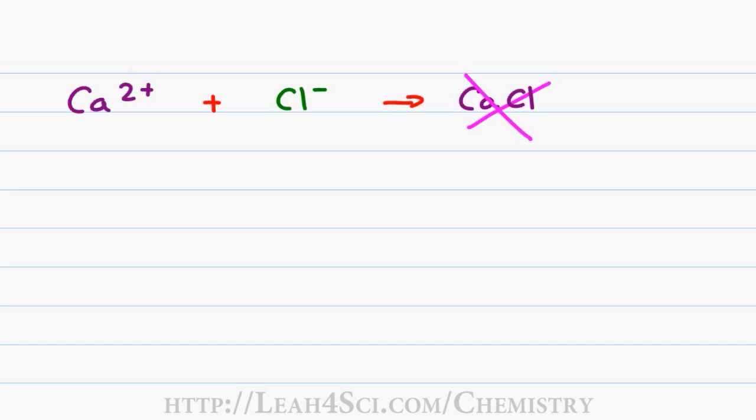The way you check the net charge is simply count up the charge on your cation which is your positive ion and the charge of your anion which is your negative ion. In this case, we have plus 2 minus 1. And if you don't believe me, punch it into a calculator but you don't get zero, you get positive 1.